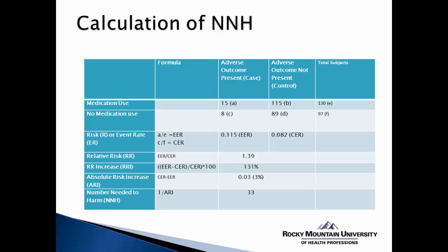Looking at the raw data, we can see that using the medication resulted in a higher rate of the adverse outcome. We also have to take into account how many total people were in each group and how many did not have the adverse outcome. So while the raw data suggests increased risk, we need to quantify that with our additional measures.